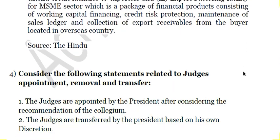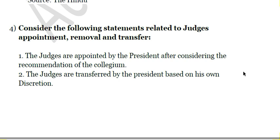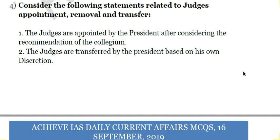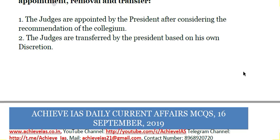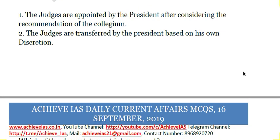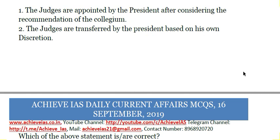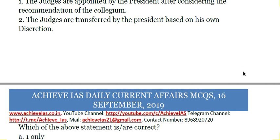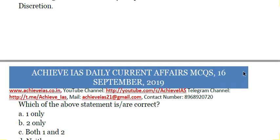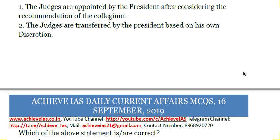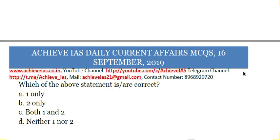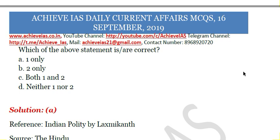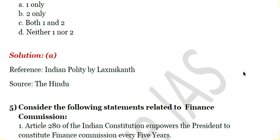Fourth question: Consider the following statements related to judges' appointment, removal and transfer. First, judges are appointed by the President after considering the recommendation of the collegium. Second, judges are transferred by the President based on his own discretion. The first statement is correct - judges are appointed by the President on the recommendation of the collegium - but the second is wrong. Judges cannot be transferred by the President based on his own discretion. The answer is A - one only.